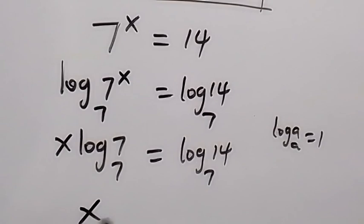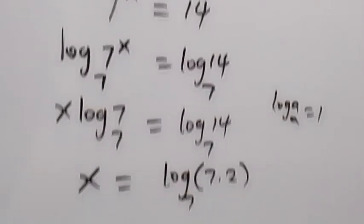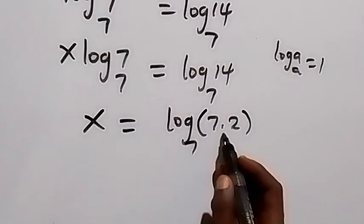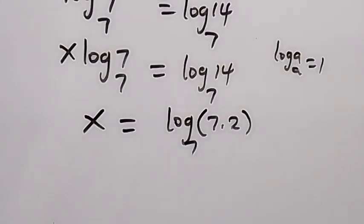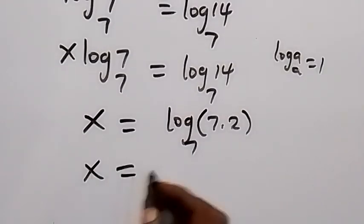Log base 7 of 14 can be expressed as log base 7 of (7·2). Also, separating this product into sum of two logs, x equals log base 7 of 7 plus log base 7 of 2.